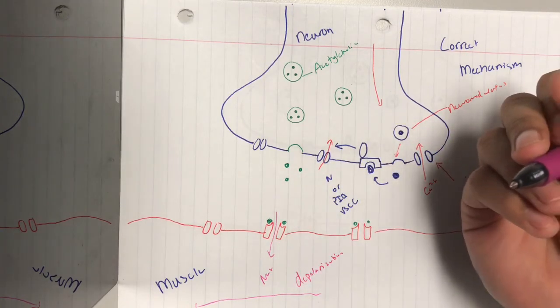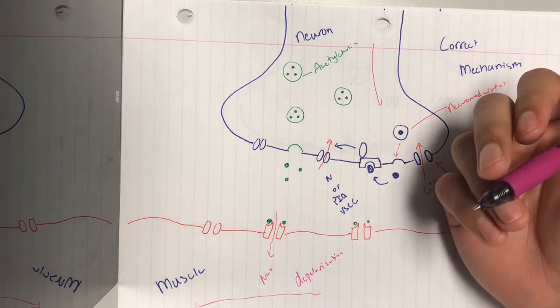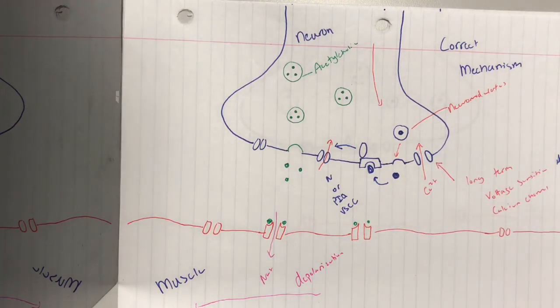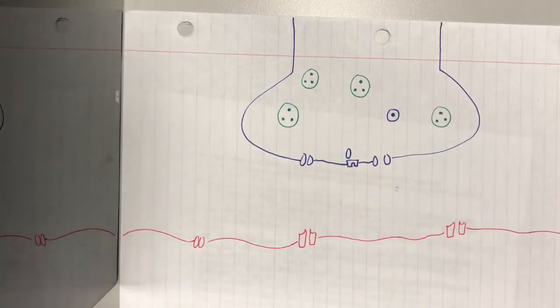That's going to trigger an action potential that just goes down to the T-tubules and causes it to contract. These sodiums technically are excitatory and they'll cause an action potential, and that's how it works when it's correct. Next, I'll model the incorrect mechanism.